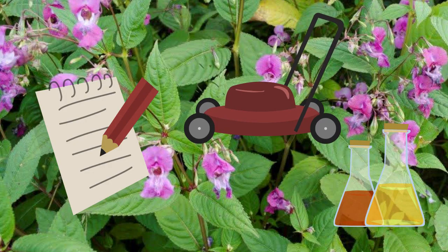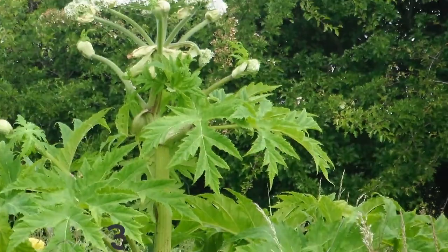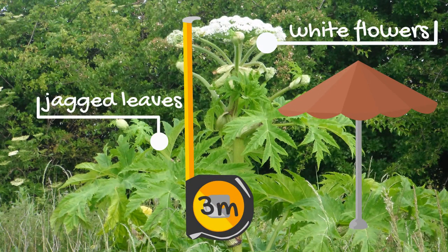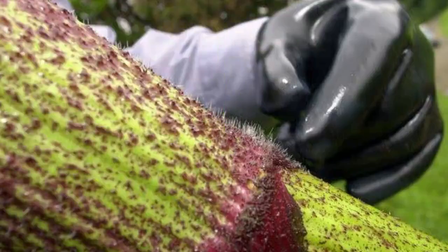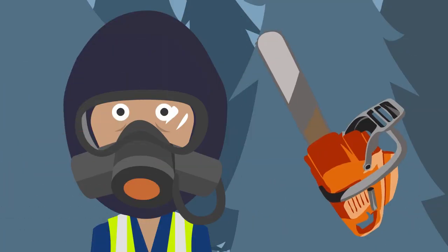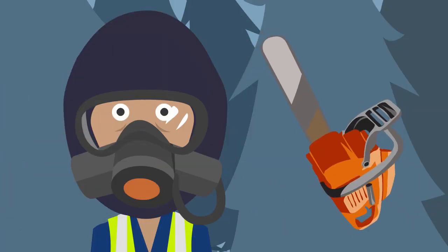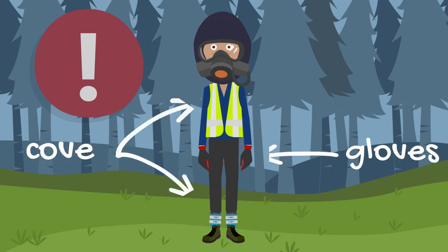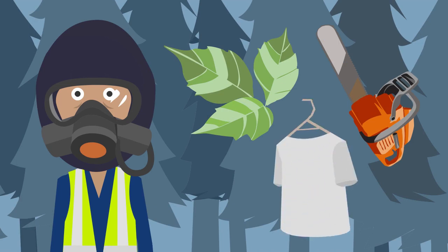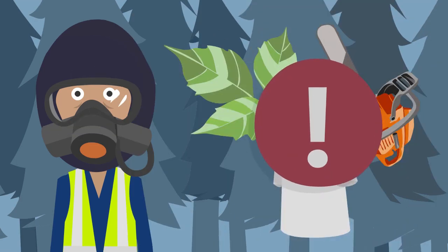Giant hogweed is a large plant over three metres in height, producing umbrellas of white flowers and having large jagged leaves. It is not considered invasive but can pose a significant hazard to health, as its sap can cause significant and painful blistering to the skin on contact. If you need to cut or clear a patch of giant hogweed, it is essential you wear gloves, cover your arms and legs, and wear a face mask. Cut plant debris, contaminated tools, and clothing are potentially hazardous too.